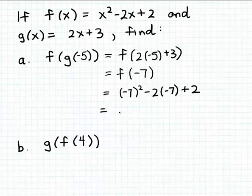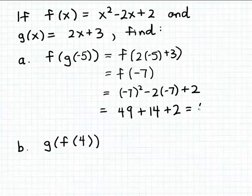So f of minus seven is minus seven squared minus two times minus seven plus two. Minus seven squared is positive forty-nine, minus two times minus seven is plus fourteen, and then we're adding two. Forty-nine plus fourteen is sixty-three, plus two is sixty-five. So f of g of minus five simplifies to sixty-five.